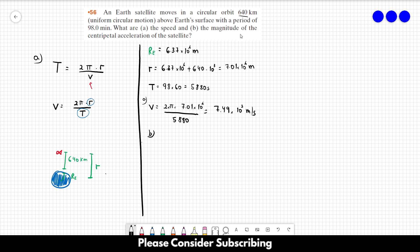For letter B, we want the magnitude of the centripetal acceleration of the satellite. And the centripetal acceleration is equal to V squared over the radius. So we just have to replace the speed that we just calculated and the radius, which is this one over here. So this is equal to 7.49 times 10 cubed, this value squared, over 7.01 times 10 to the 6. And this is roughly equal to 8.8 meters per second squared. And that's it.